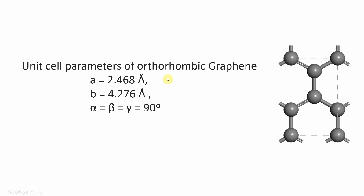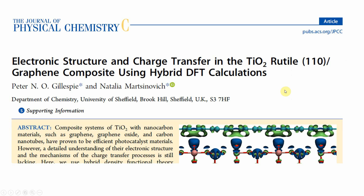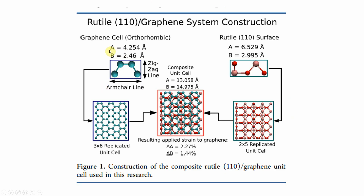This is the unit cell parameter of this orthorhombic graphene: a is 2.468, b is 4.276, and alpha, beta, gamma are all 90 degrees. This is the lattice parameter of this graphene material. In the published paper, the orthorhombic graphene lattice parameters are given as a equal to 4.254 and b equal to 2.46.